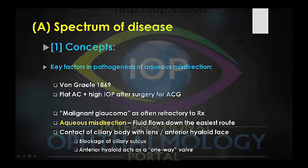Fluid then flows the easiest way, which is posteriorly. And in many ways, one can think of the anterior hyaloid as acting like a one-way valve and then trapping fluid in the posterior segment.